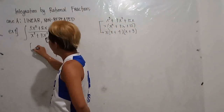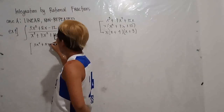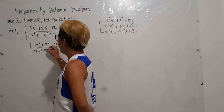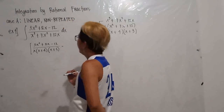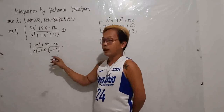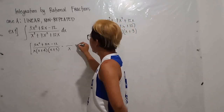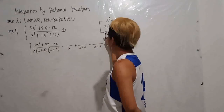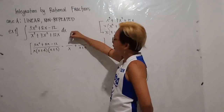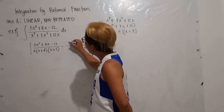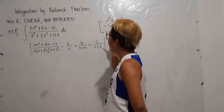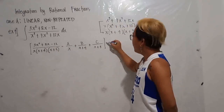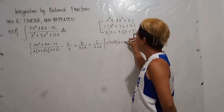So now you have the numerator 3x² + 8x − 12 over the denominator x(x + 4)(x + 3). The target is to separate the denominator into partial fractions. You will now have A/x + B/(x + 4) + C/(x + 3). Your target is to find the values of A, B, and C. Simplifying this equation, multiply the whole expression by x(x + 4)(x + 3).